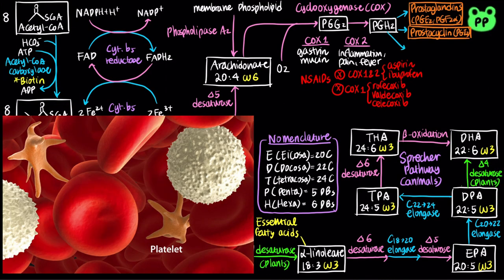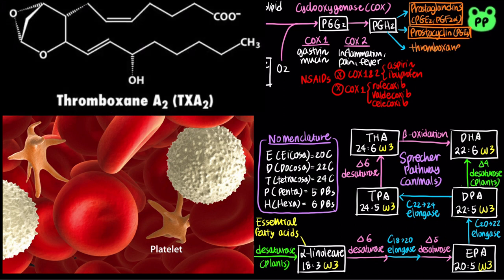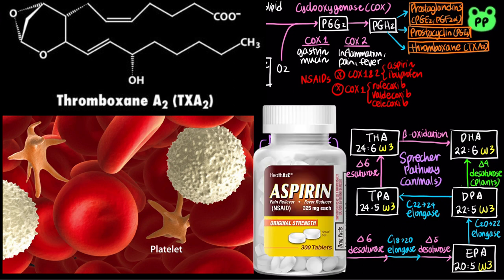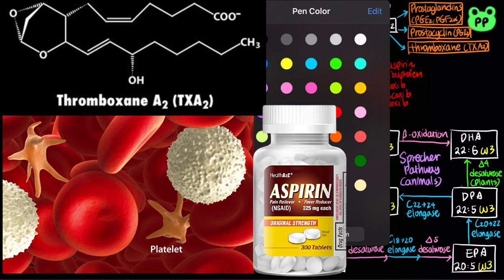In the blood platelets called thrombocytes, thromboxane synthase converts prostaglandin H2 to thromboxane A2, from which other thromboxanes are derived. Thromboxanes induce vasoconstriction and platelet aggregation, which are early steps in blood clotting. Low doses of aspirin taken regularly reduce the probability of heart attacks and strokes by reducing thromboxane production.